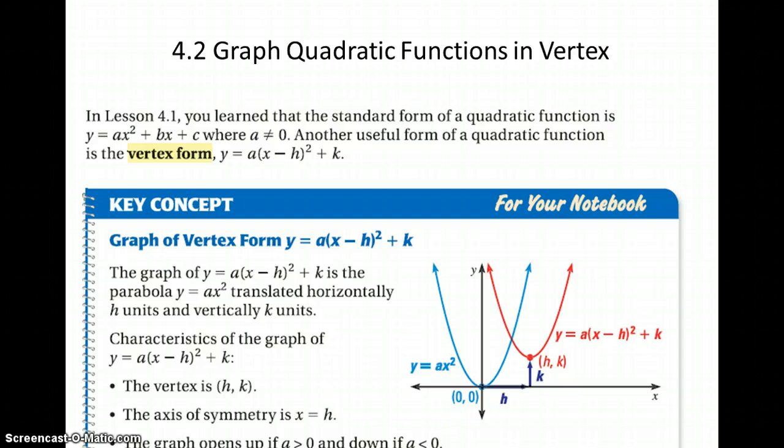So previously we learned about standard form, that was in 4.1, which is y equals ax squared plus bx plus c, where a is not equal to 0, because if it was, then we'd have a line.